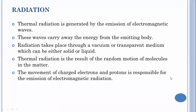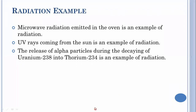Let us see some examples to make the concept clear. The microwave radiation emitted in an oven — we all know the oven is used for cooking — is an example of radiation. The ultraviolet rays coming from the sun is the simplest example of radiation. And the release of alpha particles during the decay of uranium-238 into thorium-234 is also an example of radiation.